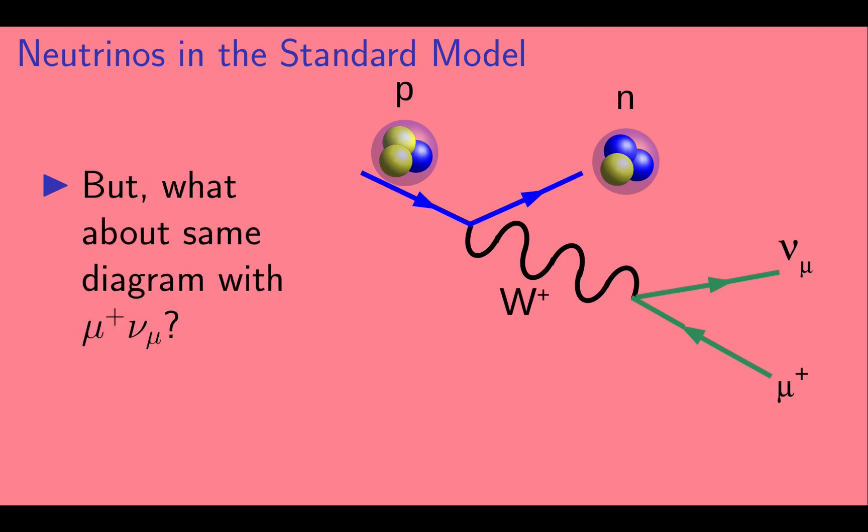Now, we could ask, what about the same diagram but with a mu plus and a muon neutrino? Or a tau plus and a tau neutrino?